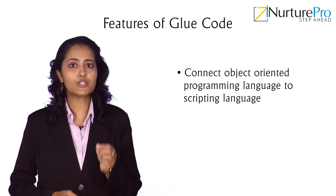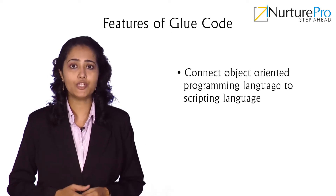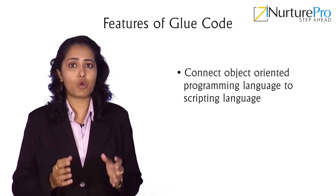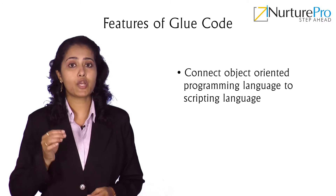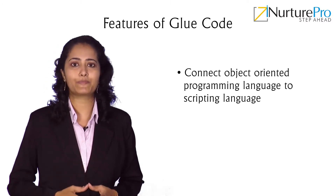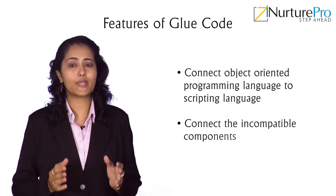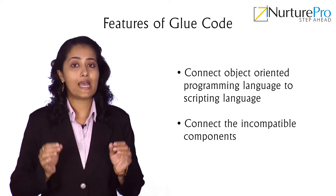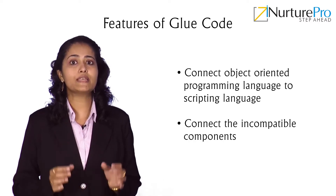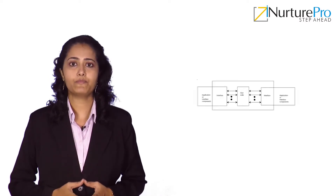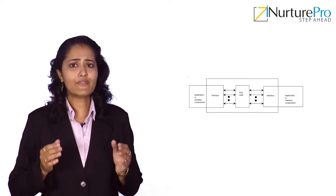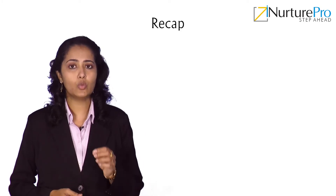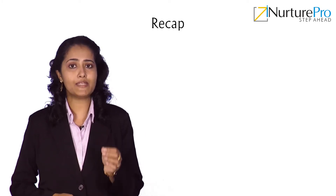Glue code can connect an object-oriented programming language to a scripting language, or modules in two different object-oriented languages which are otherwise difficult to combine. Glue code is used to exclusively connect incompatible components. An example of glue code is depicted here.